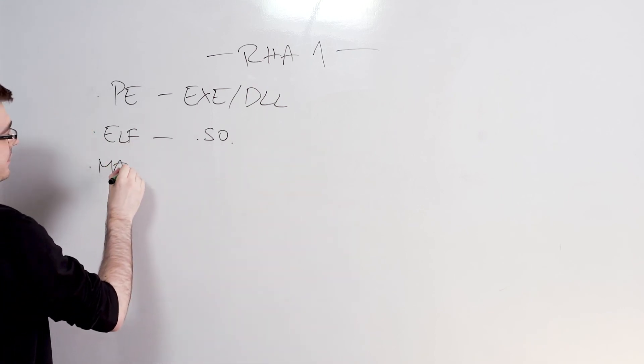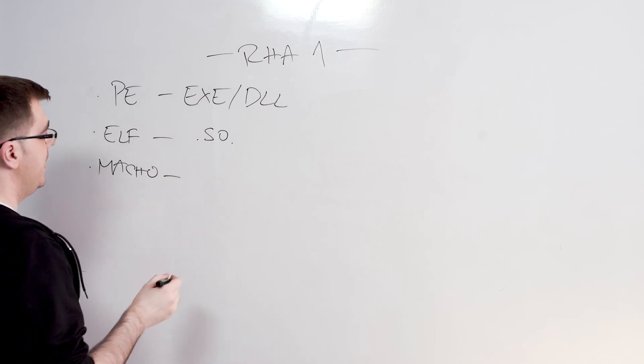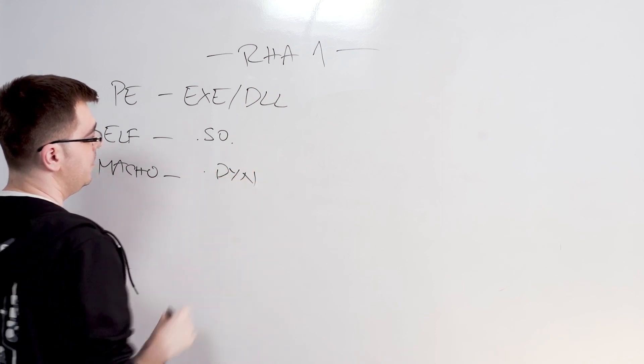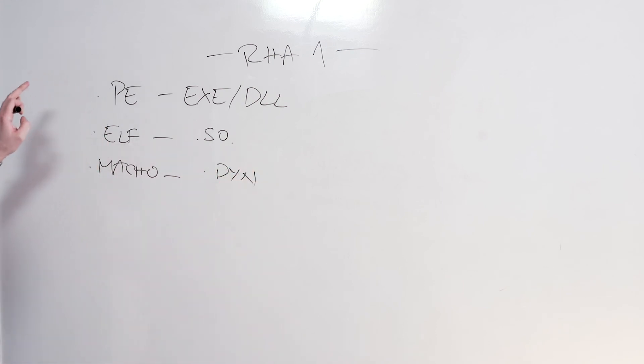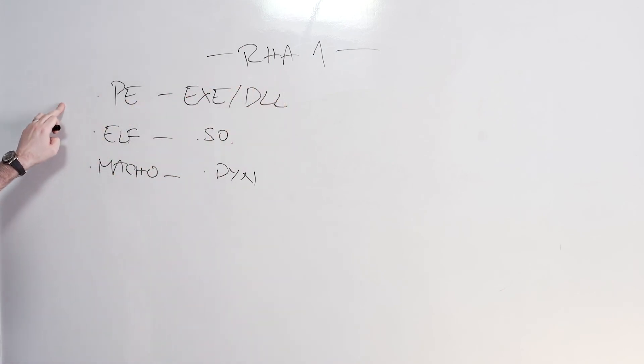It supports MacO binaries, which are executable files for Mac OS and they're the bins and so on over the world. For each and every one of those, RHA1 is implemented separately. So there's a separate implementation for portable executive files, for ELF files, for Mac OS.